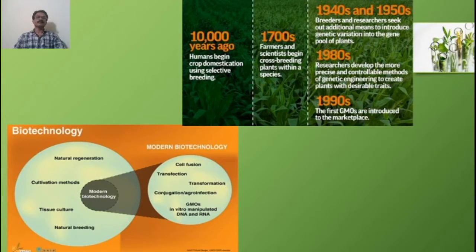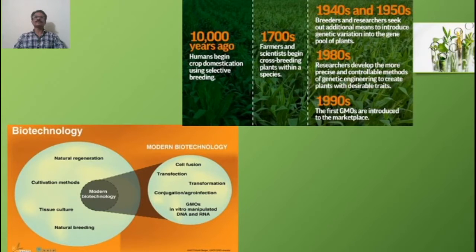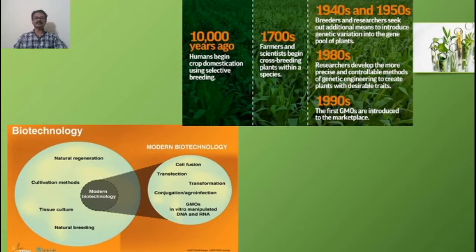Looking at the development of genetically modified organisms — starting with plant domestication, human beings began crop domestication around 10,000 years ago. Around 3 to 4 centuries ago, we started crossbreeding of plants. In the 1940s-50s, breeders sought additional means to introduce genetic variation into the gene pool. In the 1980s, more precise and controllable methods of genetic manipulation were developed. In the 1990s, the first marketable genetically modified organism was obtained — the Flavr Savr tomato — which came to market in 1994.